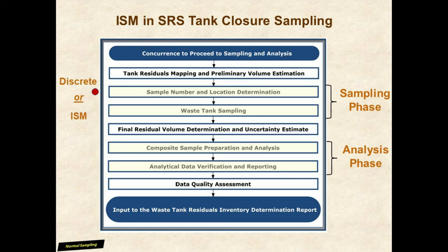The two flowchart boxes highlighted in yellow show the in-tank sampling phases. Sampling phases could be either discrete or incremental samples. Phase one determines the number and location of sample increments to schedule in the tank, while phase two executes the sampling plan. During phase two, operators glean additional information regarding tank residual material depth, particle sizes, particle distribution, and other parameters, updating the initial volumetric survey and developing an uncertainty estimate on the volume. The two boxes below the final volume results show the sample preparation, analytical, and data verification phases, performed by the Savannah River National Laboratory. Finally, the data quality assessment is performed and the resulting data provide inputs to the waste tank residuals inventory determination report.